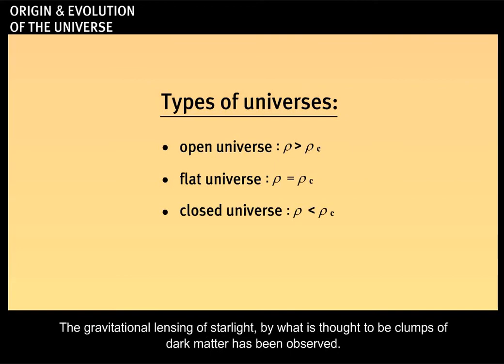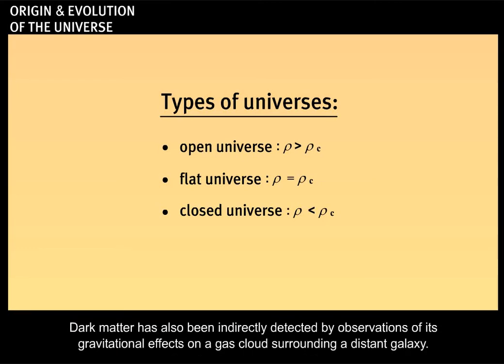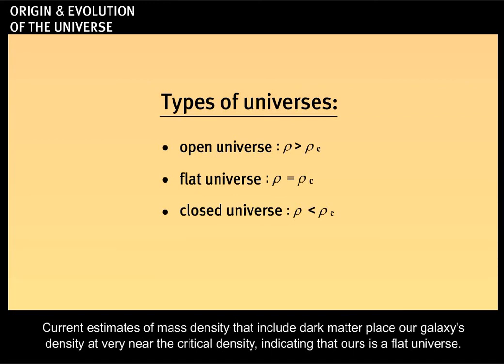The gravitational lensing of starlight by what is thought to be clumps of dark matter has been observed. Dark matter has also been indirectly detected by observations of its gravitational effects on a gas cloud surrounding a distant galaxy. Current estimates of mass density that include dark matter place our galaxy's density at very near the critical density, indicating that ours is a flat universe.